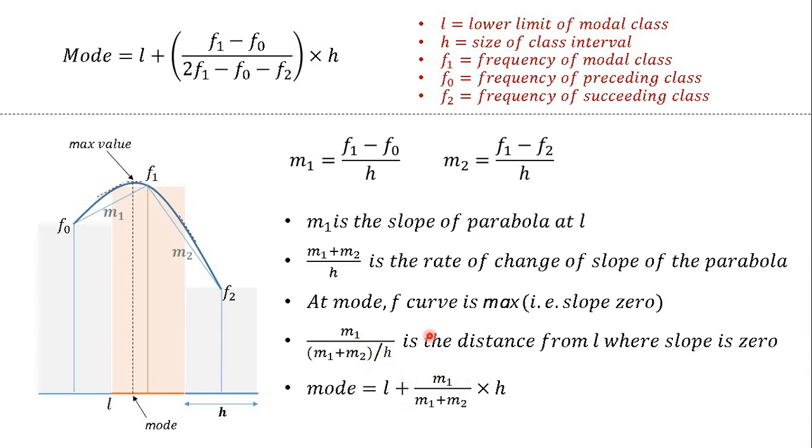Now here M1 is proportional to f1 minus f0, M2 is proportional to f1 minus f2. So from here you can see how we get to the formula. And now we can understand this formula by directly looking at it.